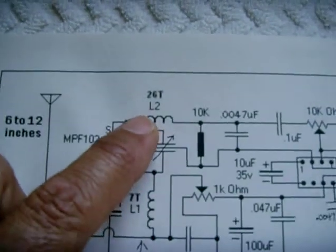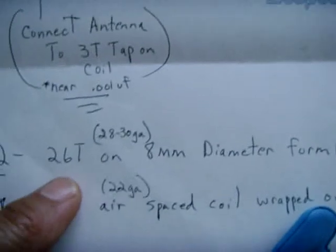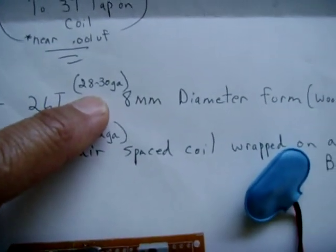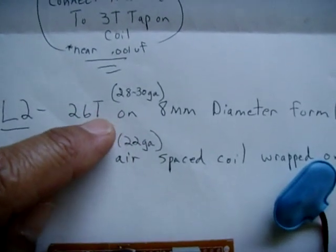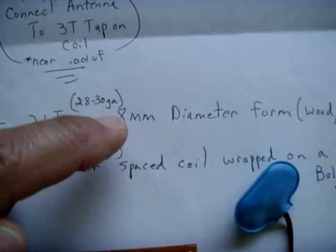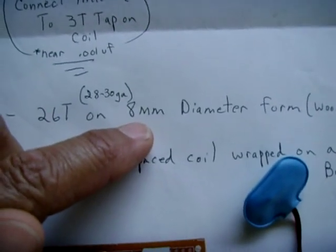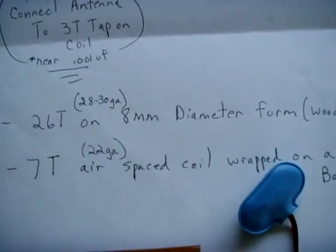To make L2, that has 26 turns of either 28 or 30 gauge enamel copper wire and you're going to wrap them side by side very tight on an 8 millimeter diameter form.